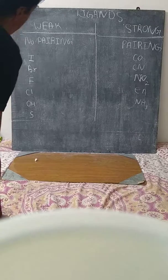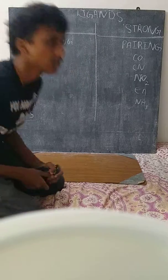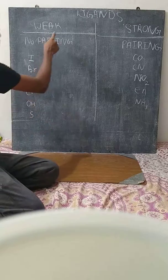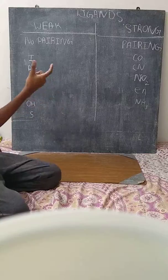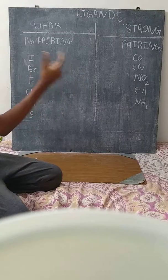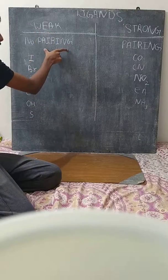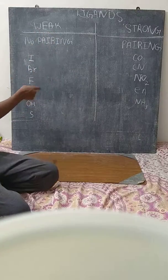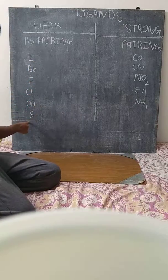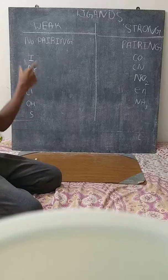So, let's say we have strong-field ligands and weak-field ligands. Weak-field ligands are the ones that do not pair the two electrons.